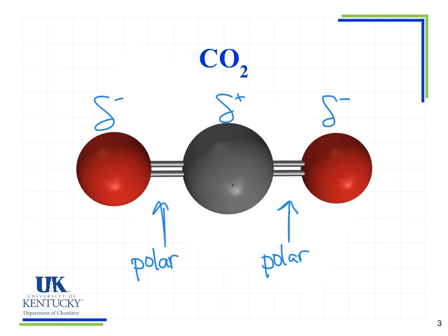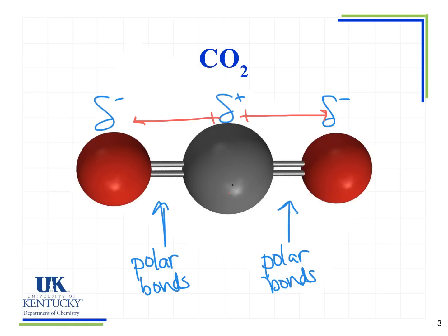The electrons are spending more time around the oxygen atoms than around the carbon atom. If I draw the arrow representation, I see that each bond has a magnitude and a direction, and the two arrows are equal in size but go in opposite directions. Imagining the oxygen atoms as two tug-of-war teams with the carbon as the rope in the middle, no one wins this game — the oxygen atoms pull equally and oppositely on the central carbon. So while we have two polar bonds, overall our molecule is nonpolar.